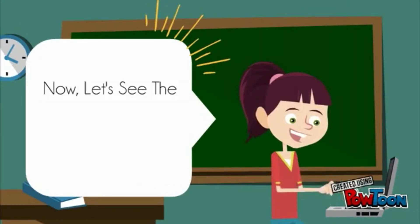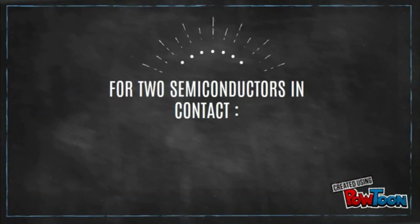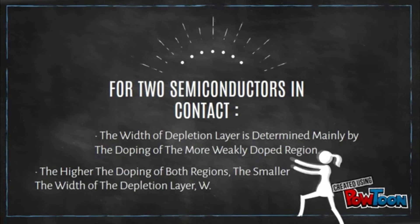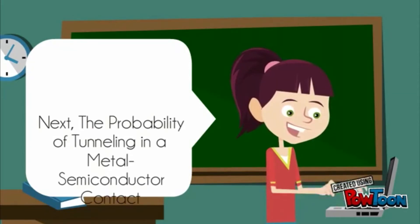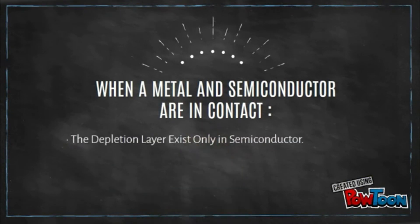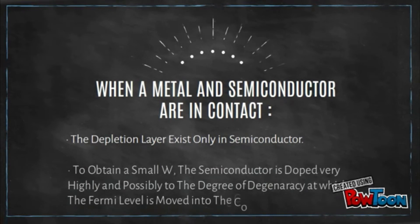Now let's see the probability of tunneling in a semiconductor-semiconductor junction. For two semiconductor regions in contact, the width of the depletion layer is determined mainly by the doping of the more weakly doped region. The higher the doping of both regions, the smaller the width of the depletion layer W. For a metal-semiconductor contact, the depletion layer exists only in the semiconductor. To obtain a small depletion layer W, the semiconductor is doped very highly, possibly to the degree of degeneracy, at which the Fermi level is moved into the conduction band.